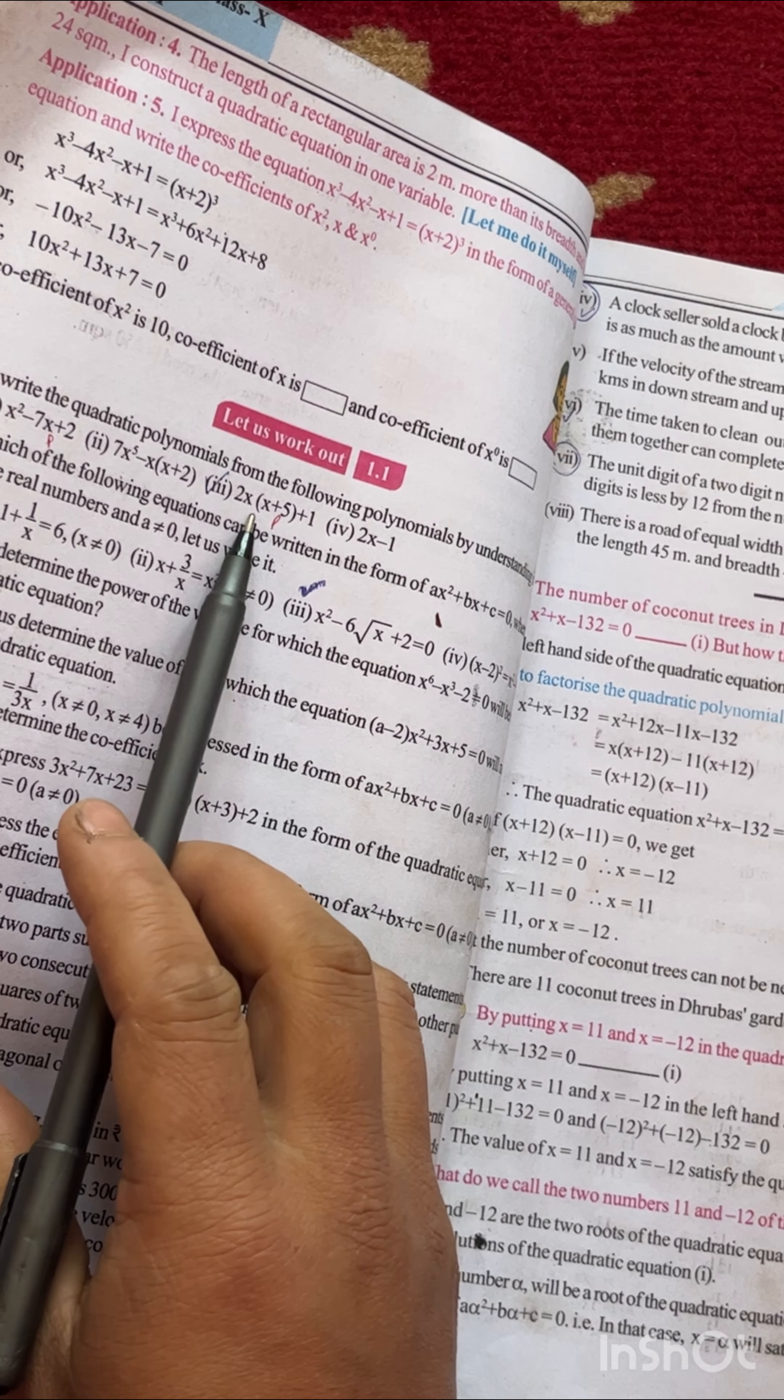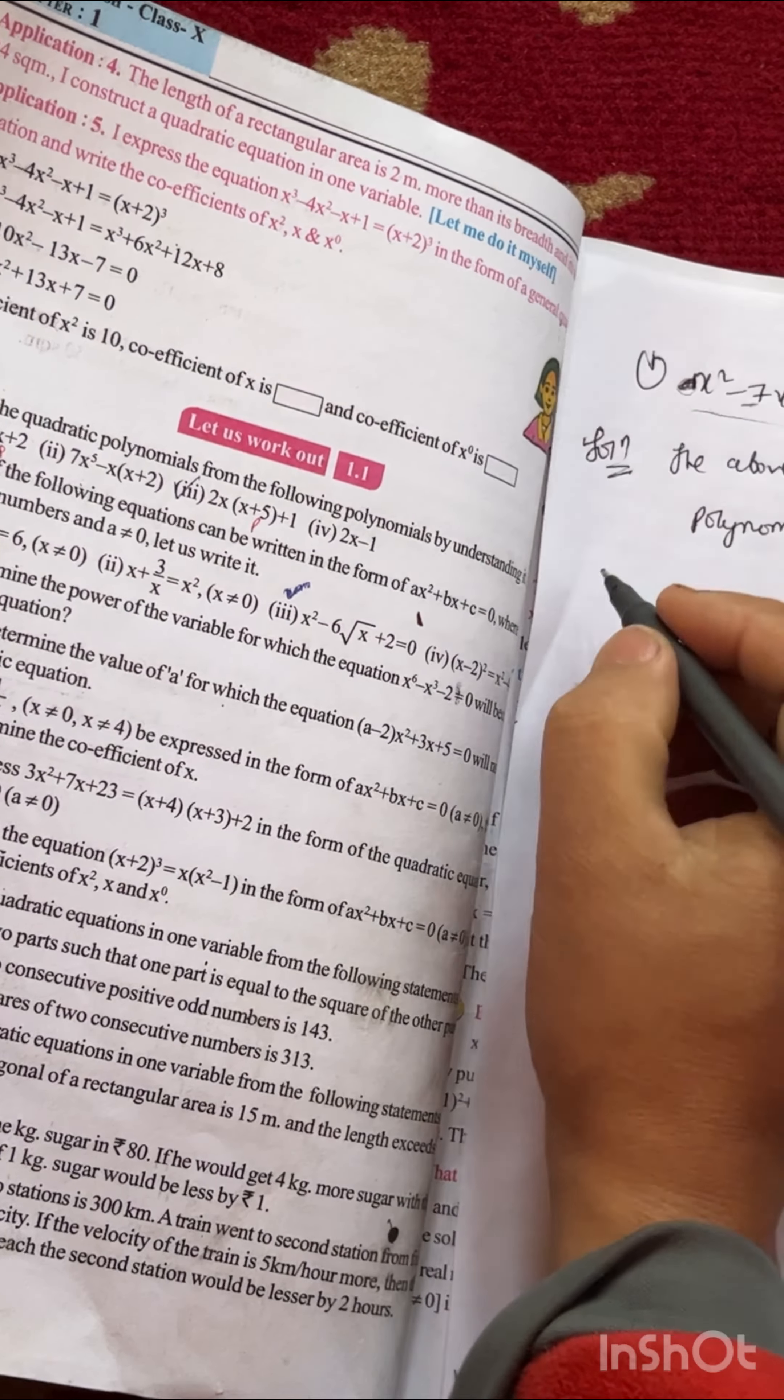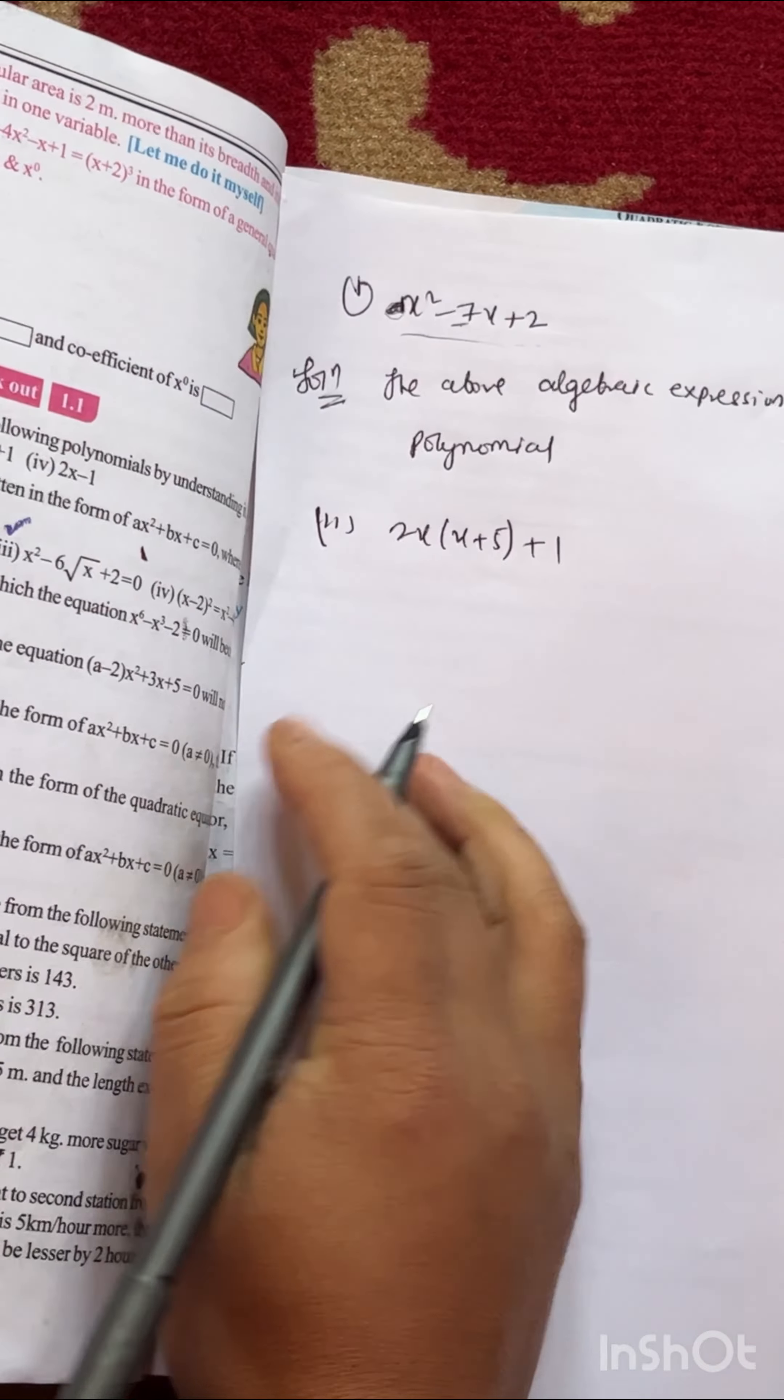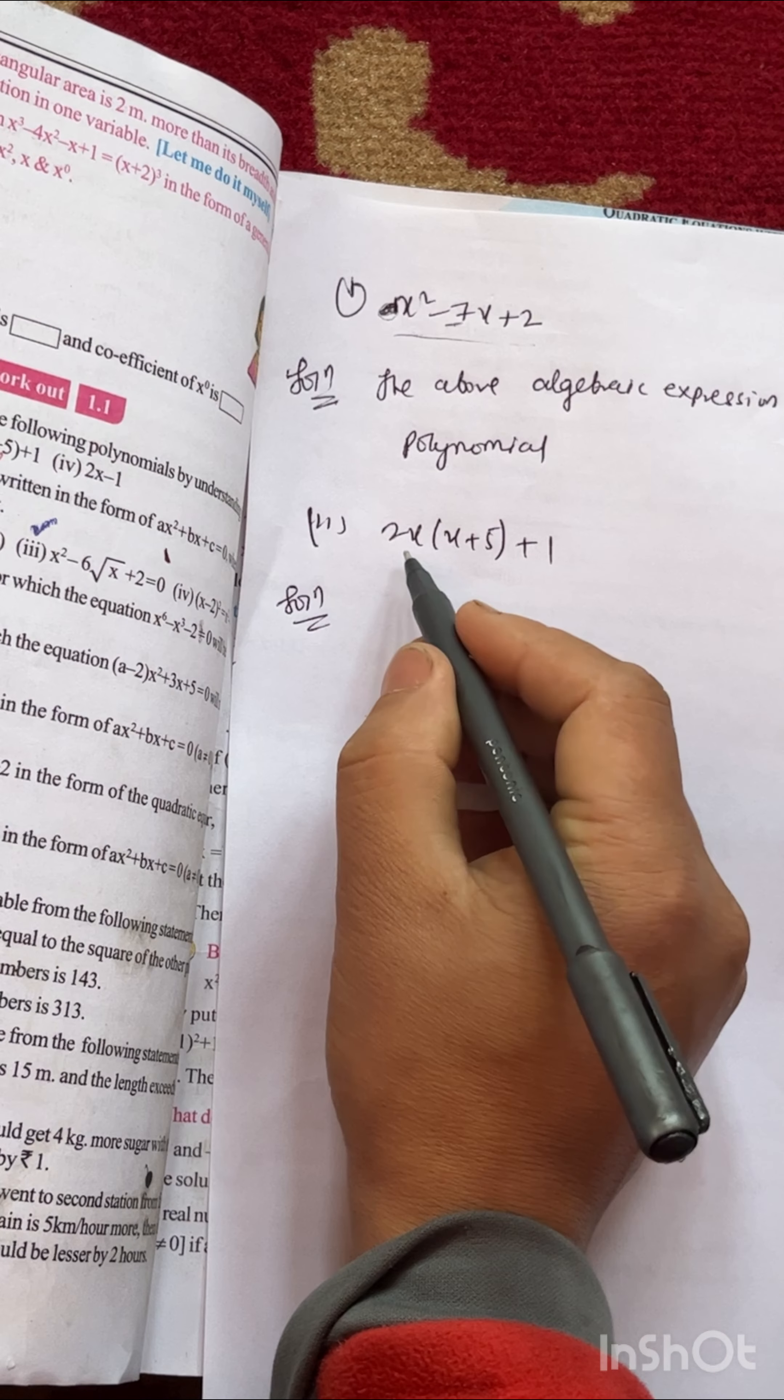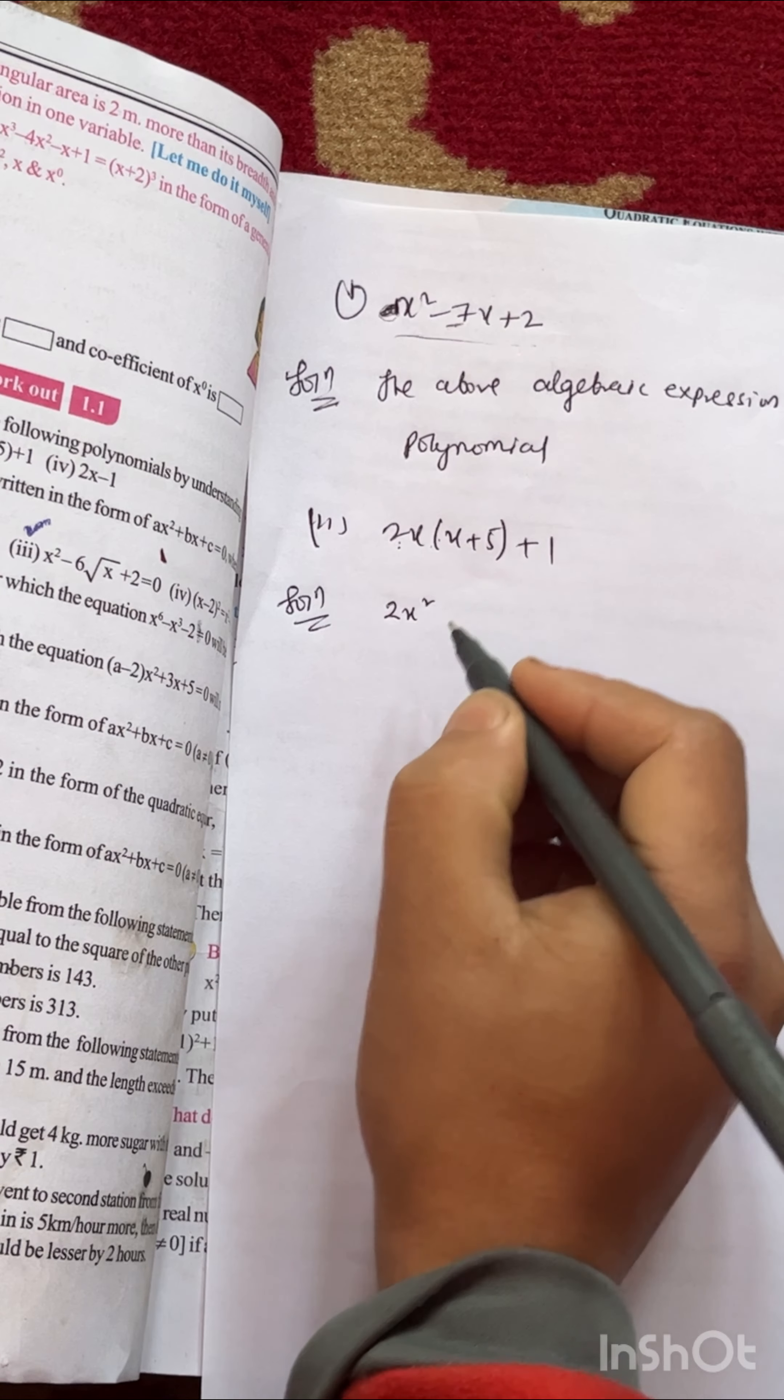Question 3: 2x(x + 5). We cannot say directly if this is quadratic or not, so first we have to solve this. Let me expand the bracket.